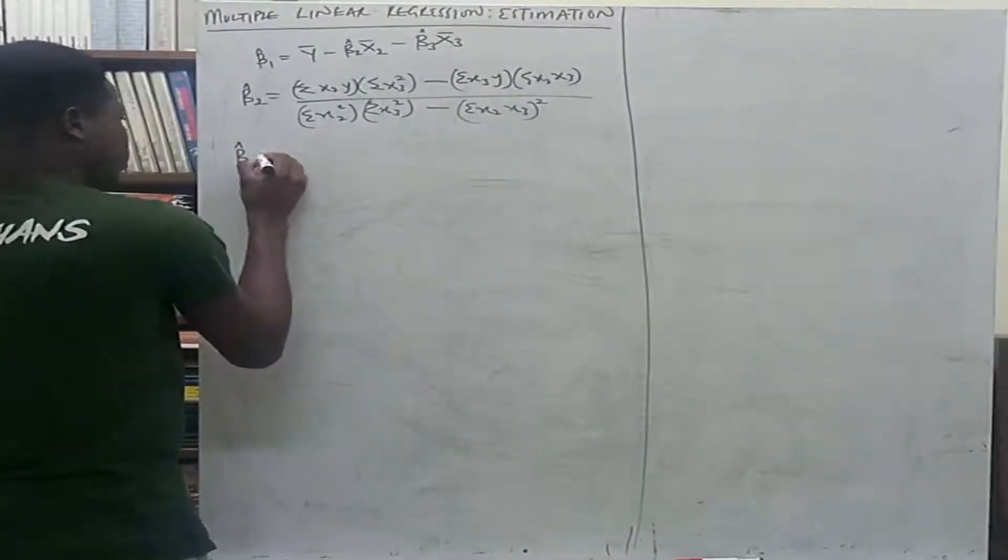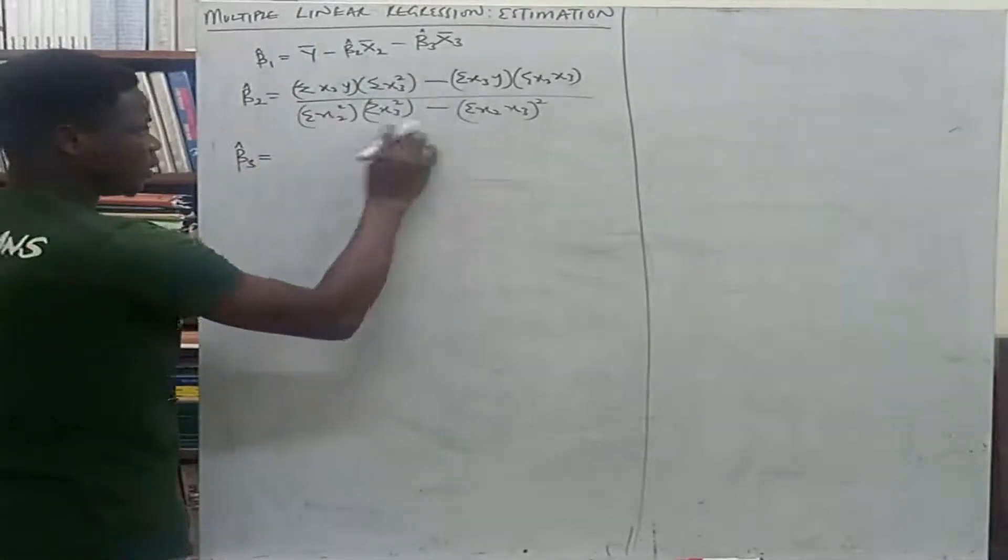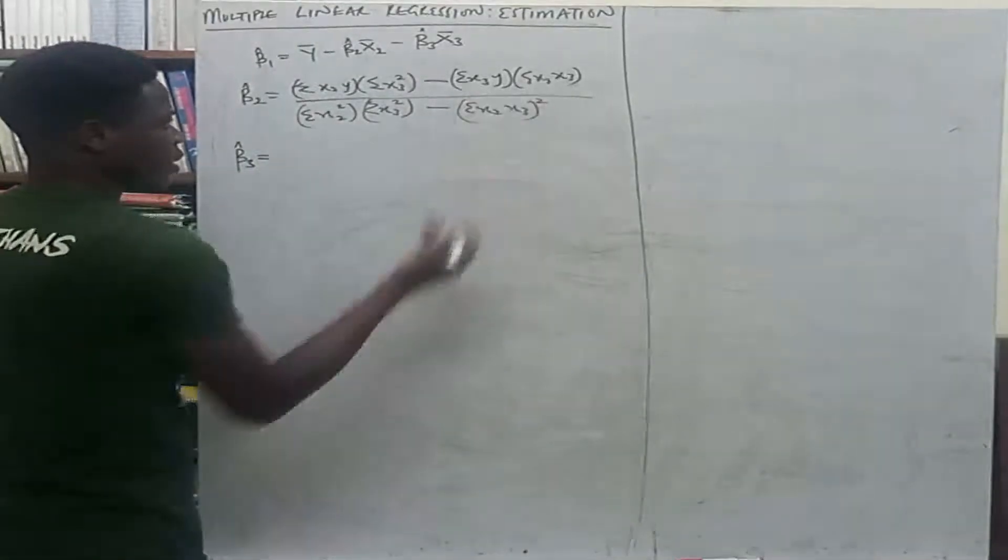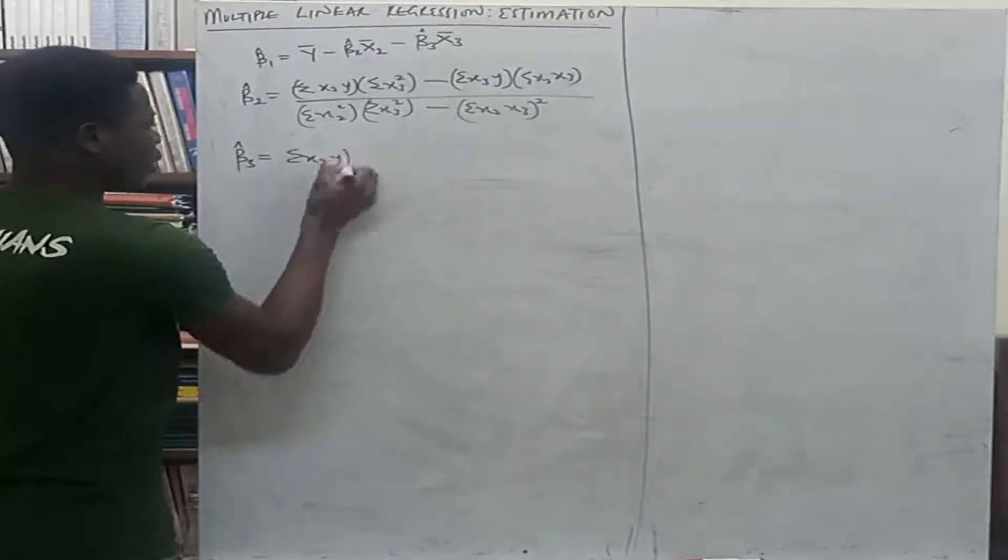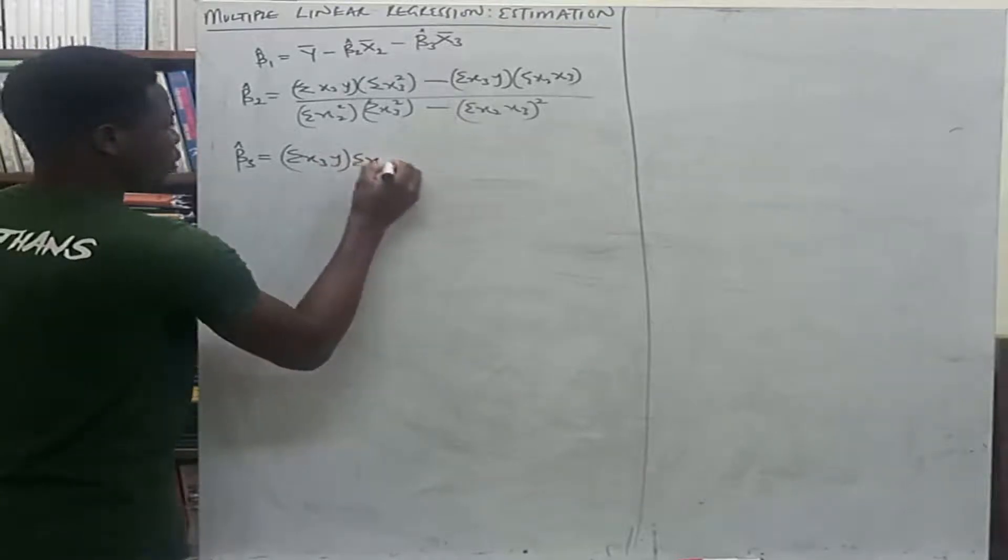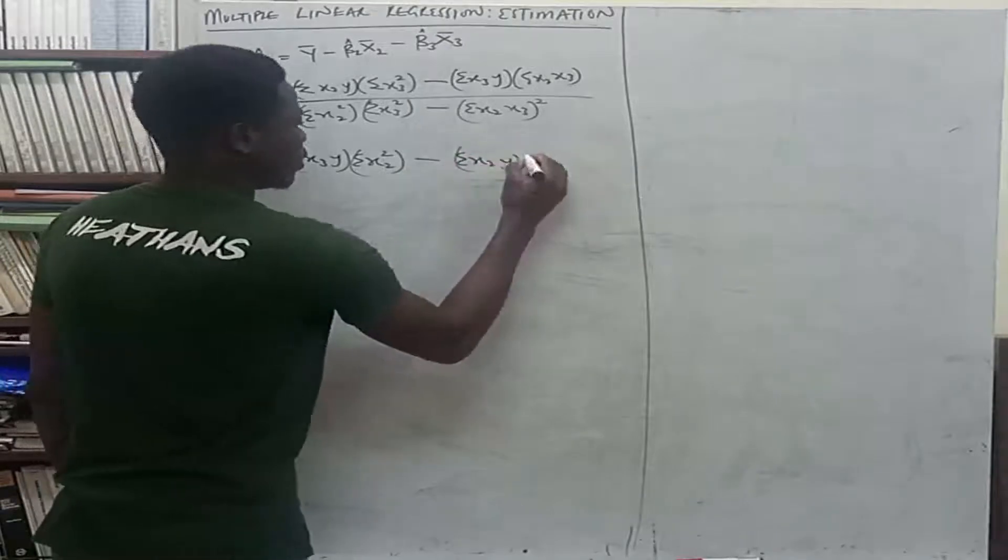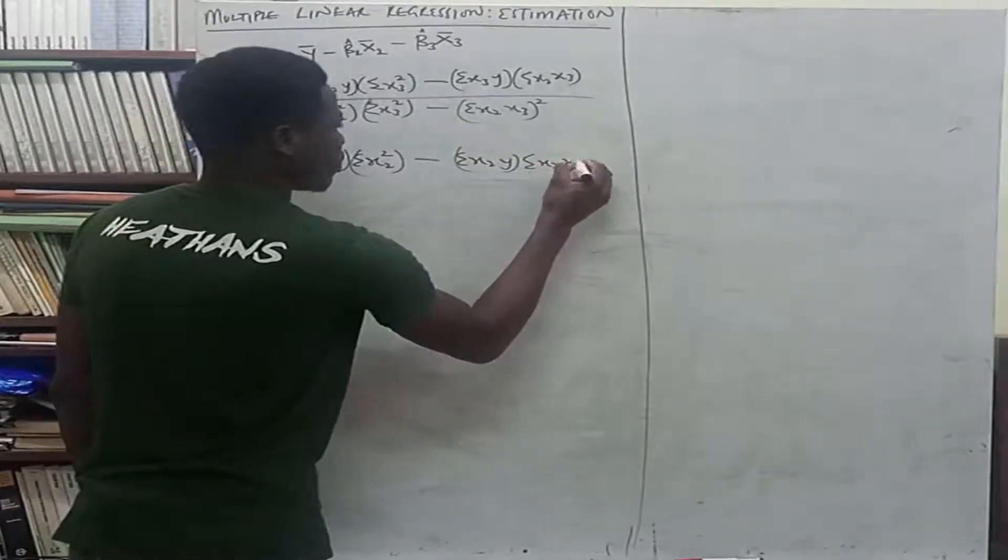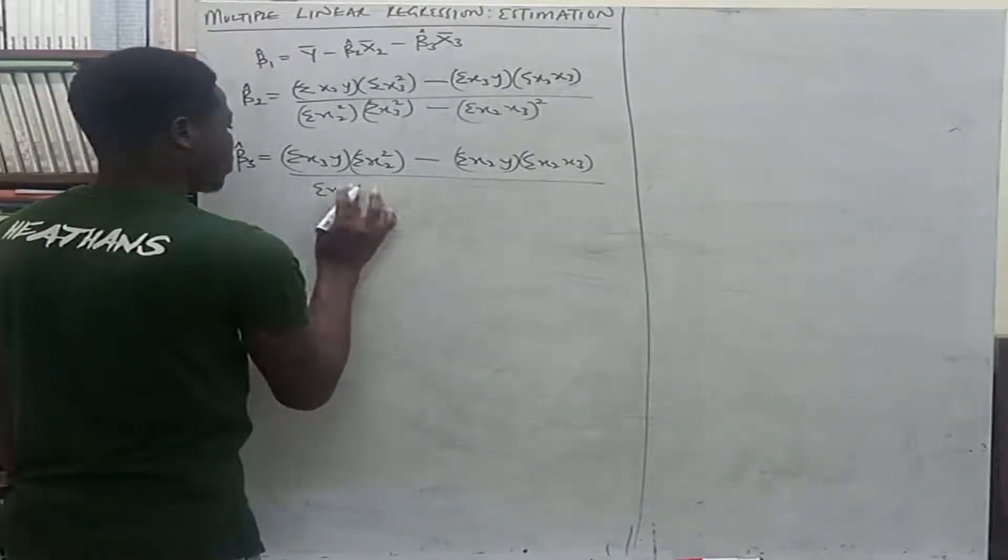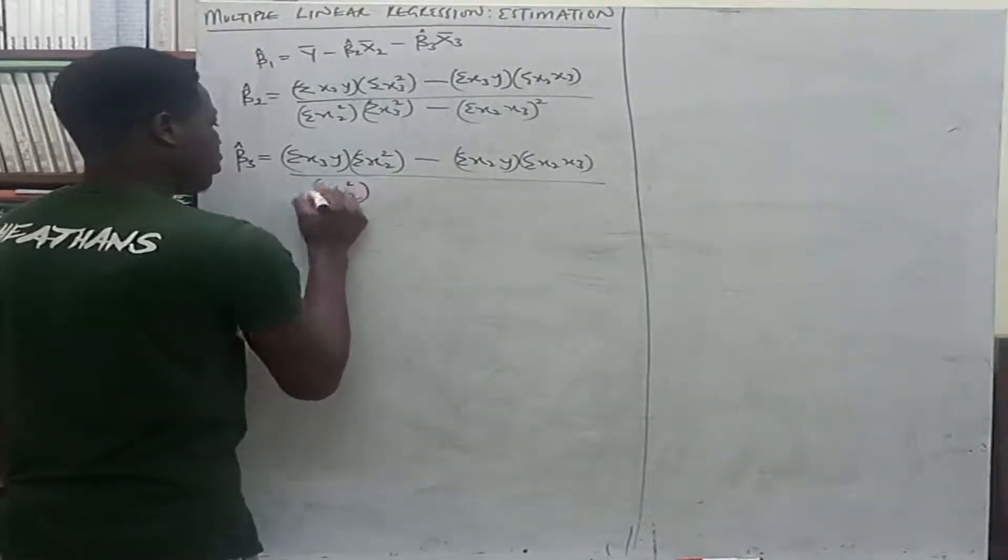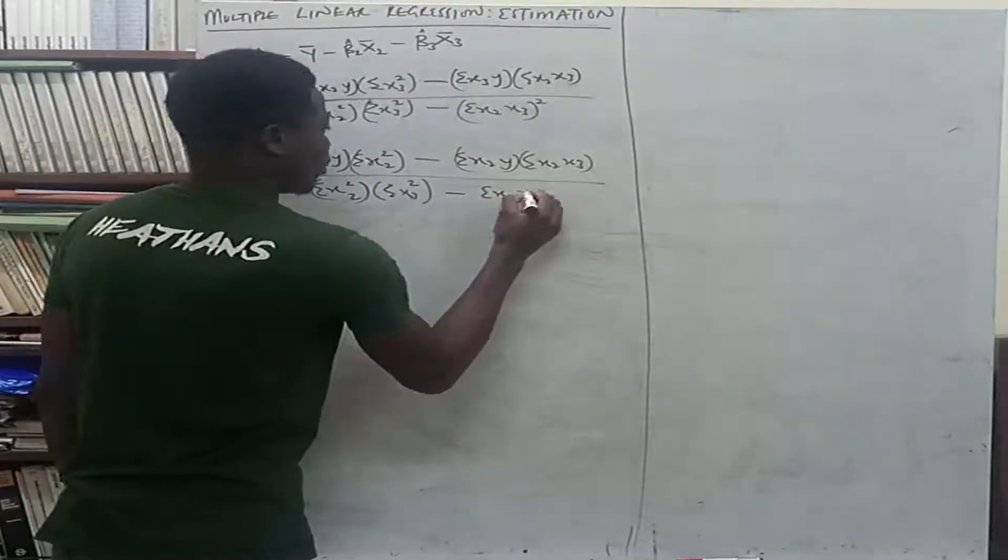Then beta3, like I said in our previous class, all you have to do is interchange them. The denominators are the same, and the last variable here is the same. So just say summation x3y times summation x2 squared minus summation x2y times summation x2x3, all over summation x2 squared times summation x3 squared minus summation x2x3 all squared.